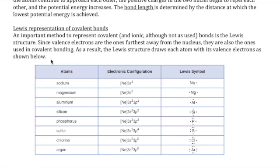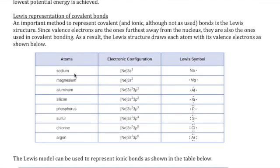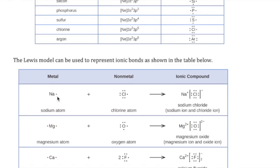The Lewis representation, or Lewis structure, is a tool used to illustrate how bonds are shared between atoms. In a covalent bond, we use dots to represent valence electrons. For example, sodium has an electron configuration of neon and then 3s1, so its valence electron is that 3s electron — there's only one — so we draw sodium as 'Na' with a single dot. Chlorine has the configuration Ne 3s² 3p⁵, giving it 7 valence electrons.